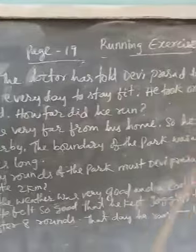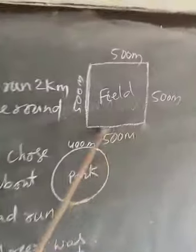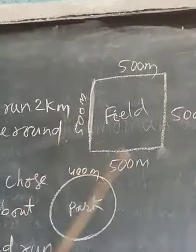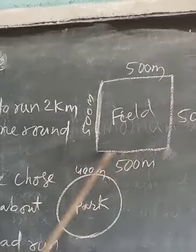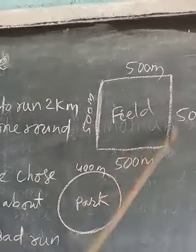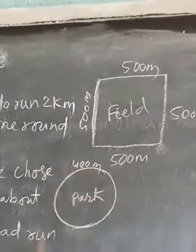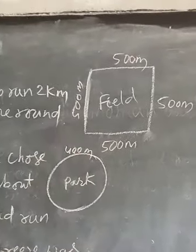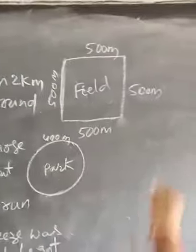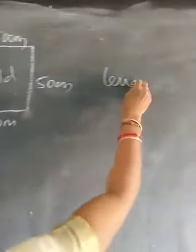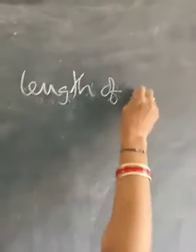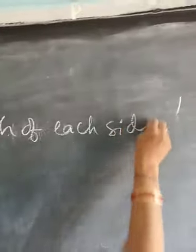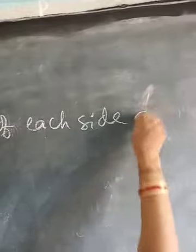See, this is the field. Each length of the field is 500 meters. So, what type of figure is it? It is looking like a square because all sides are equal. So, the length of each side is equal to 500 meters.